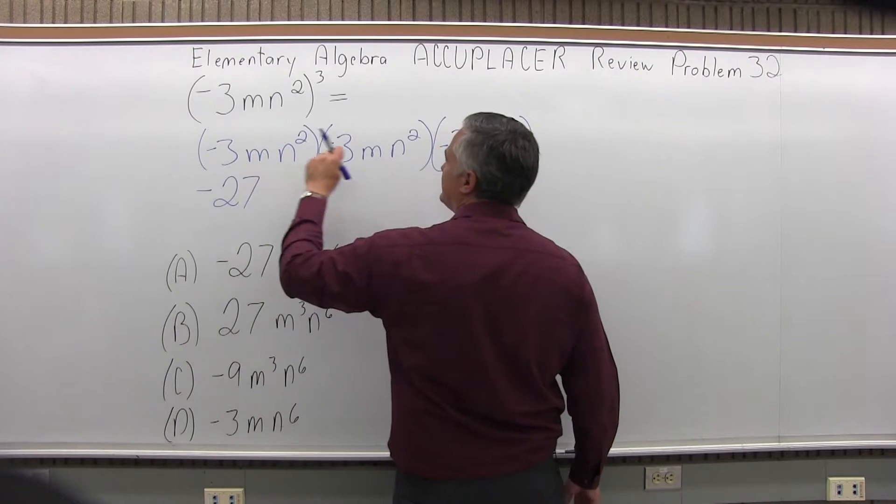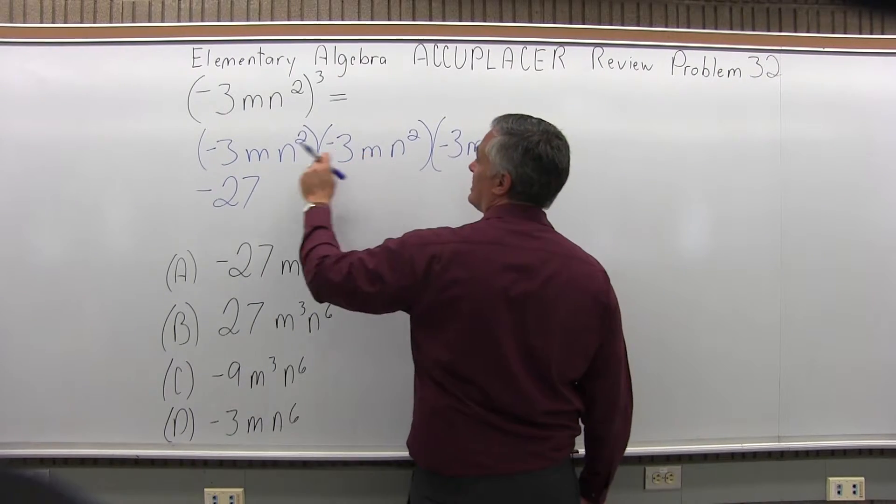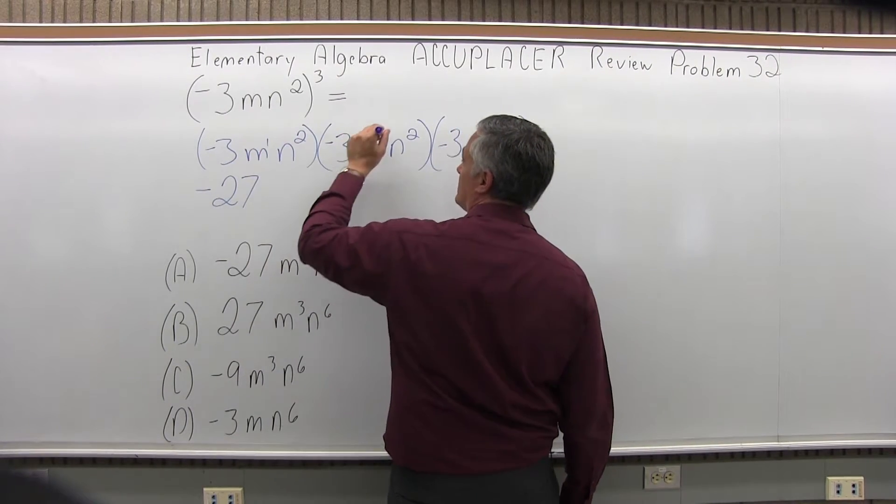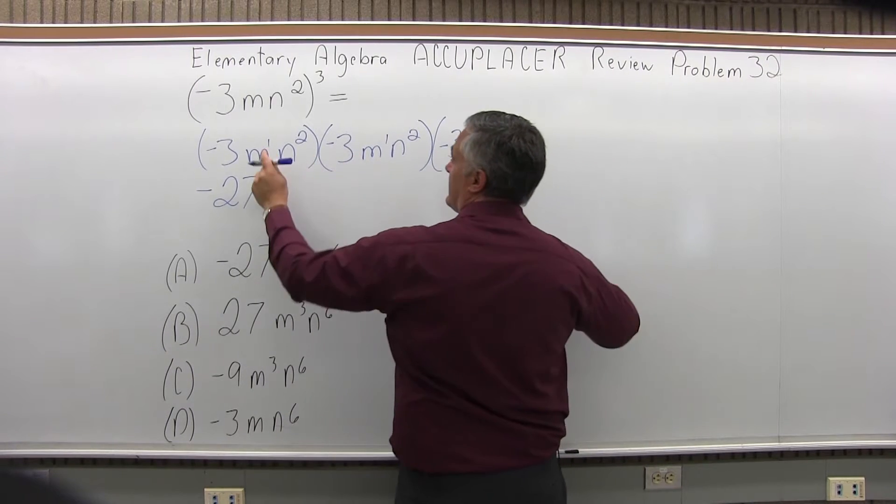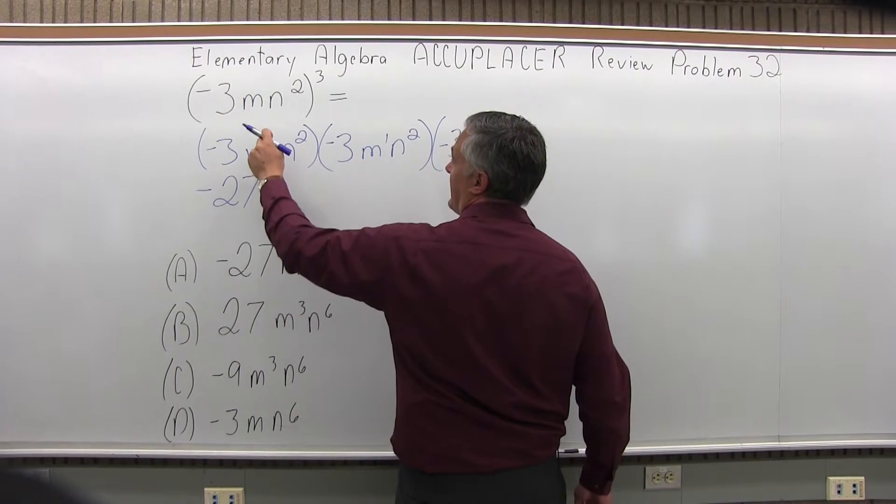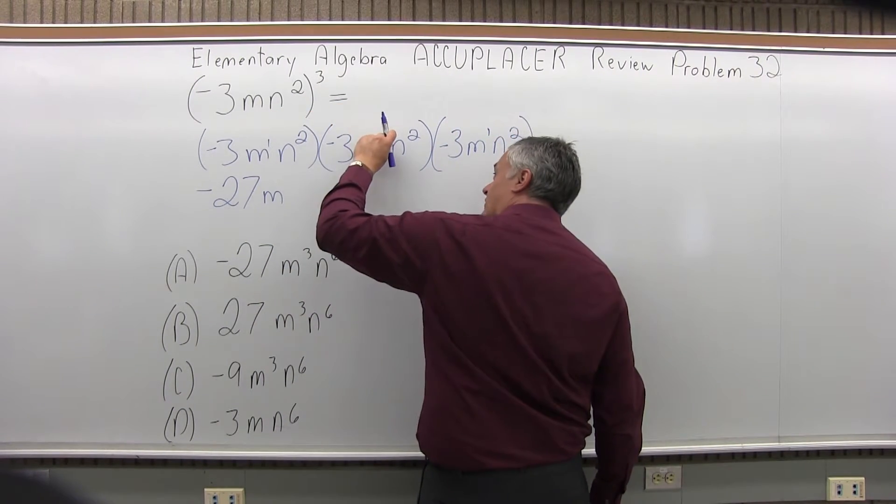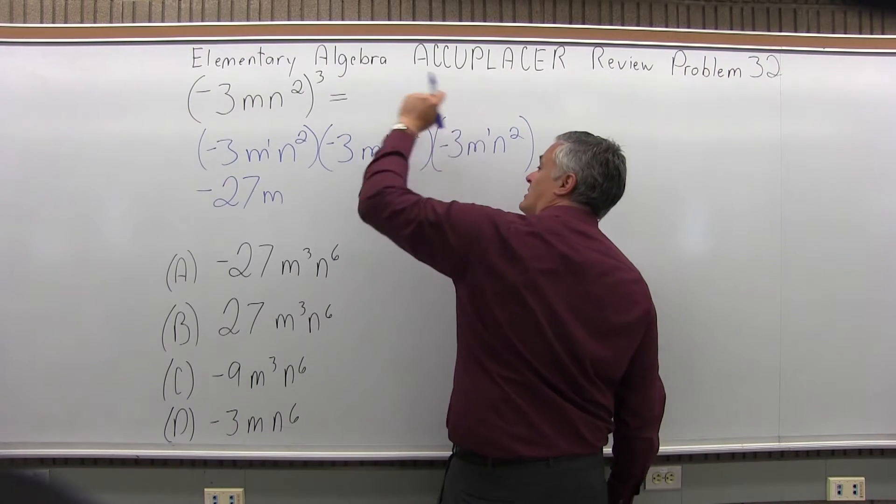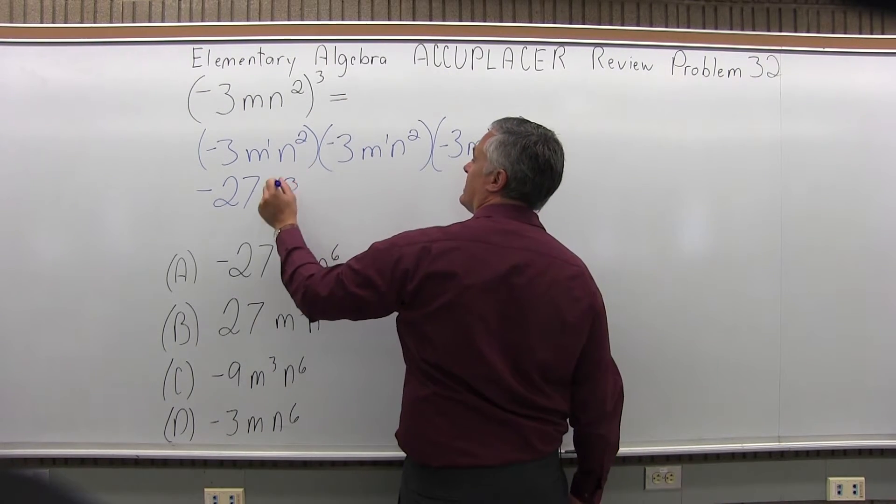If you look at the m's next, each m doesn't have an exponent, but you can assume it's a first power. So I have the same base. I'm going to put in an m and then add first, plus another first, plus another first. So 1 plus 1 plus 1 is 3.